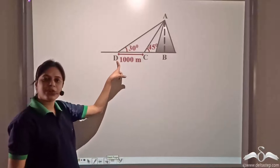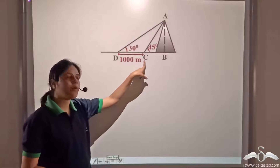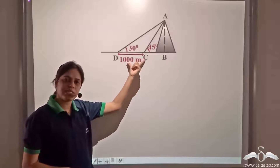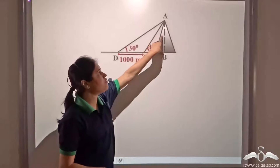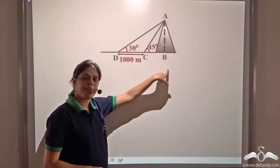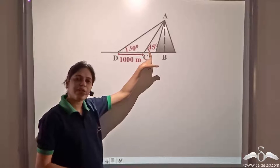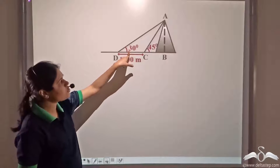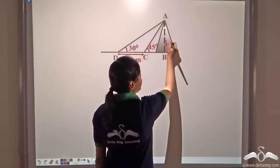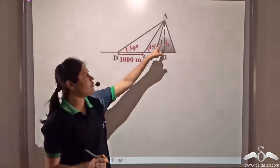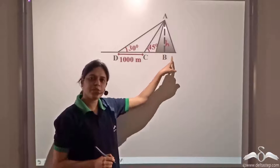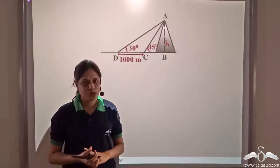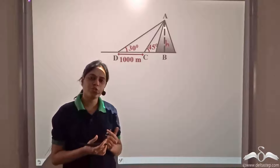We have named the first point of observation as D and the second point of observation as C. The distance CD between these two points is one thousand meters and the height of the mountain is AB. We need to find AB. The angle of elevation at C is forty-five degrees and at D is thirty degrees. Let's say AB is equal to H — the height of the mountain.